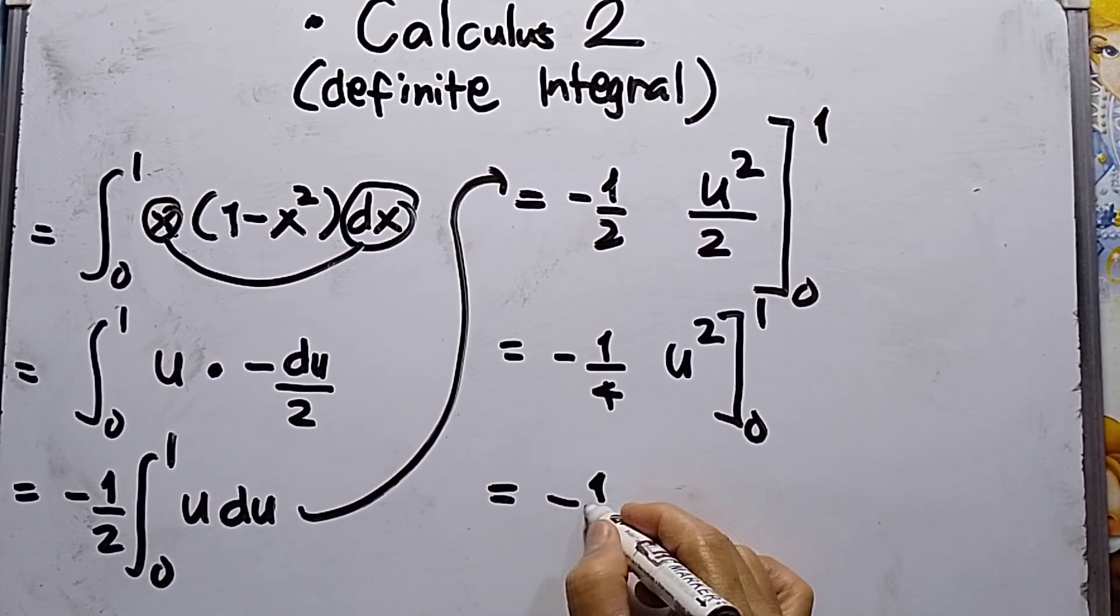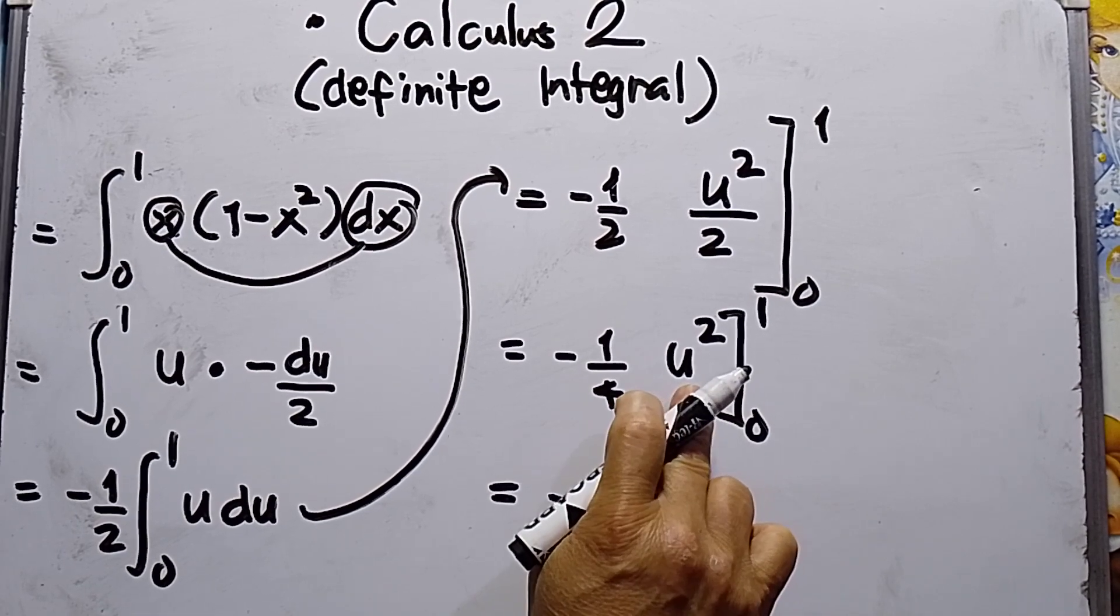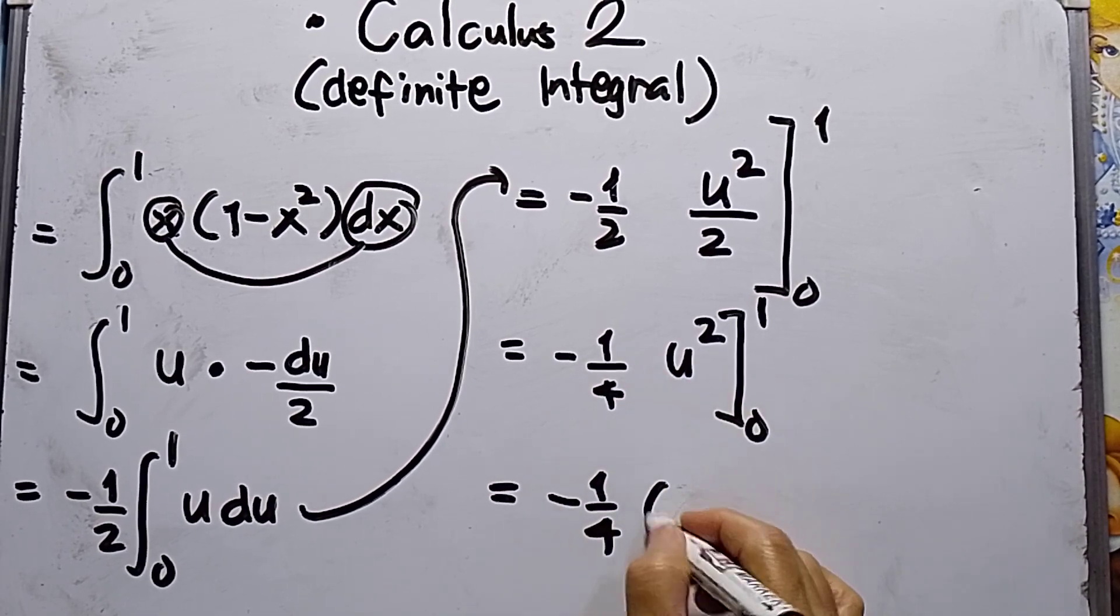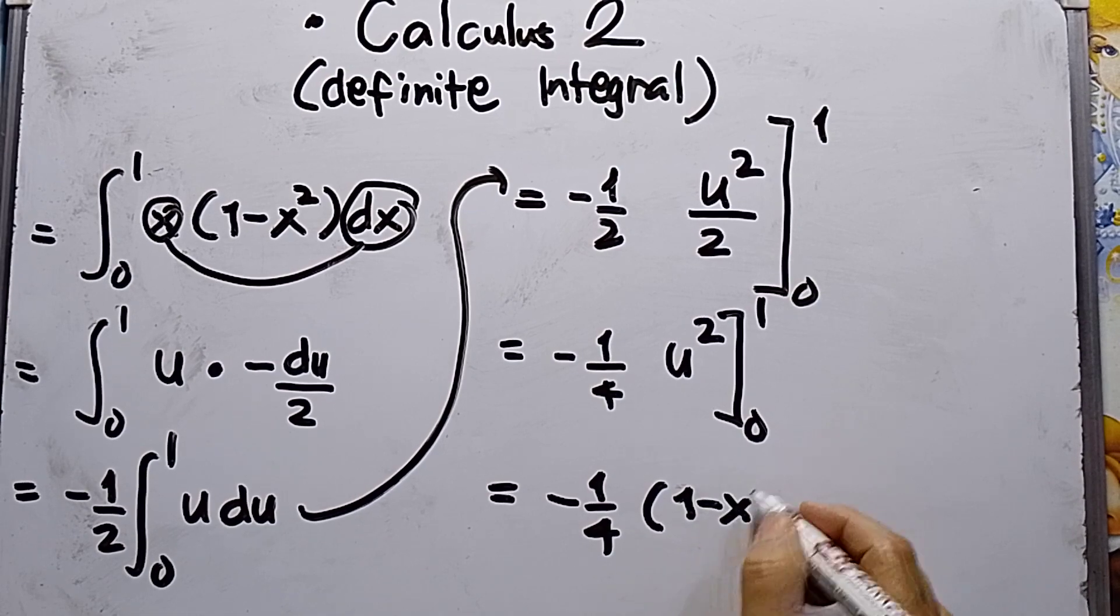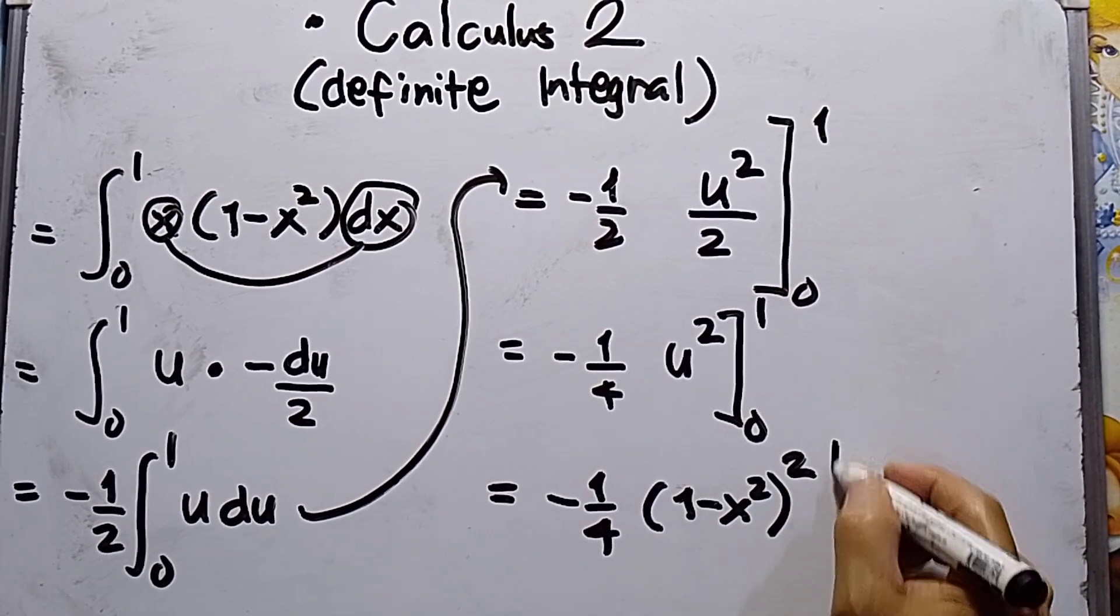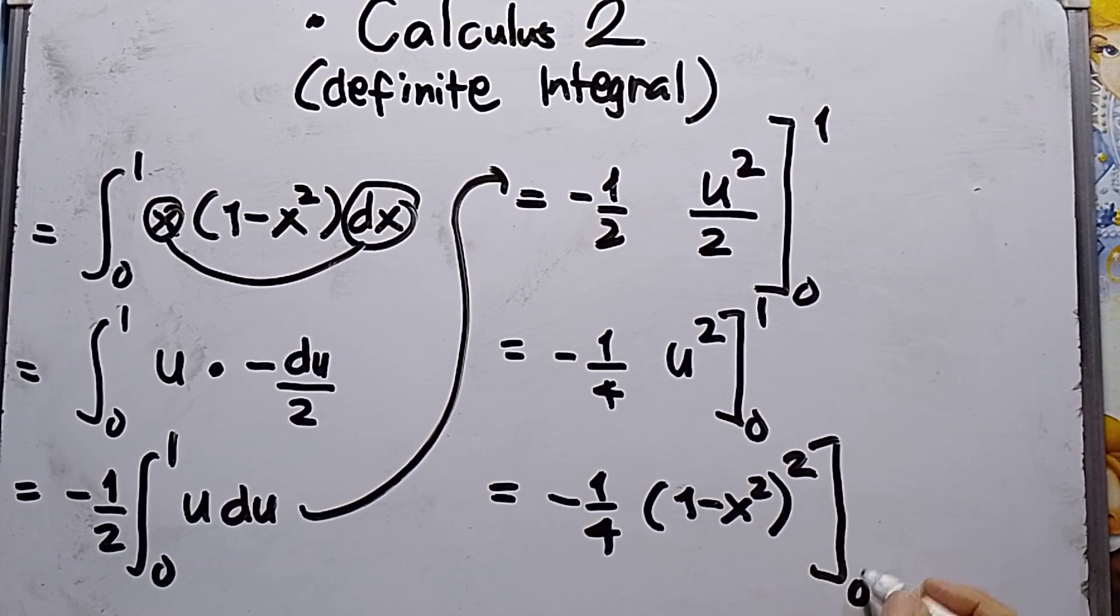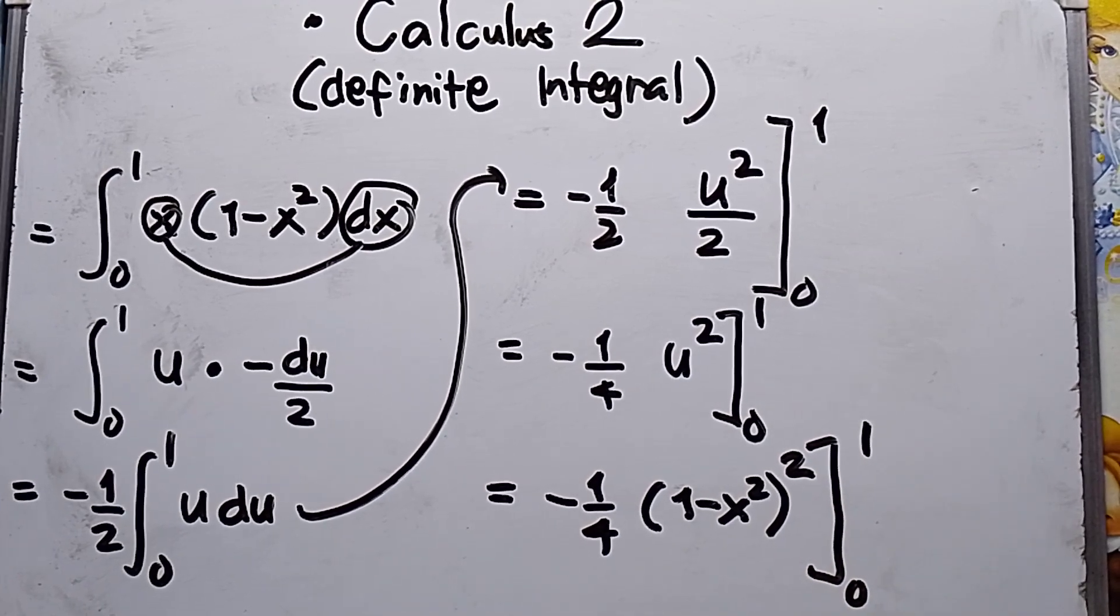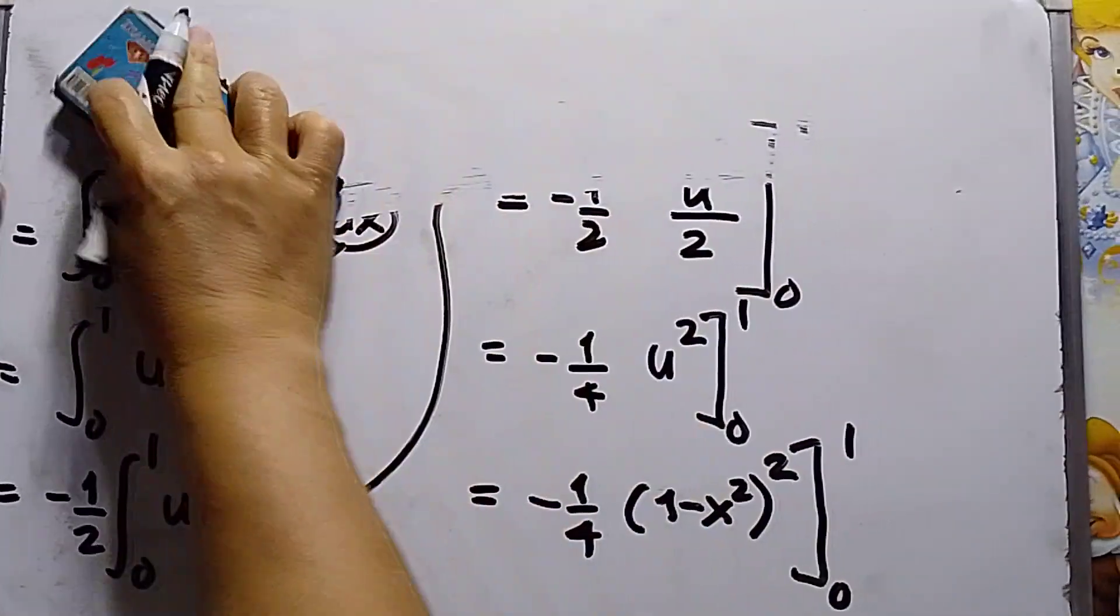This will be negative 1 over 4. We go back to the assumption. This will be 1 minus x squared, raised to the second power, limits from 0 to 1. Now substitute the limits.